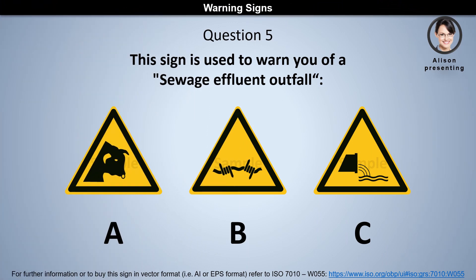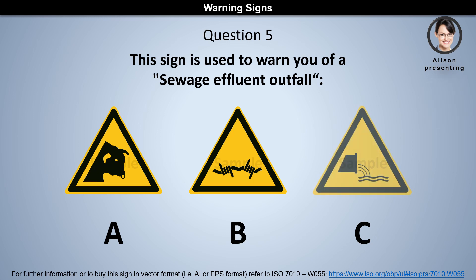Question 5. This sign is used to warn you of a sewage effluent outfall. Is it A, B, or C? The answer is C.